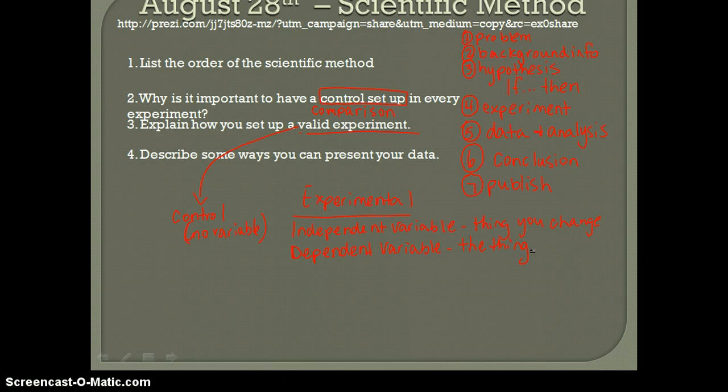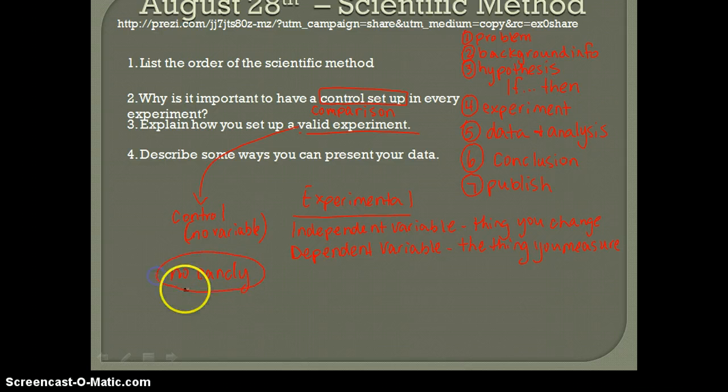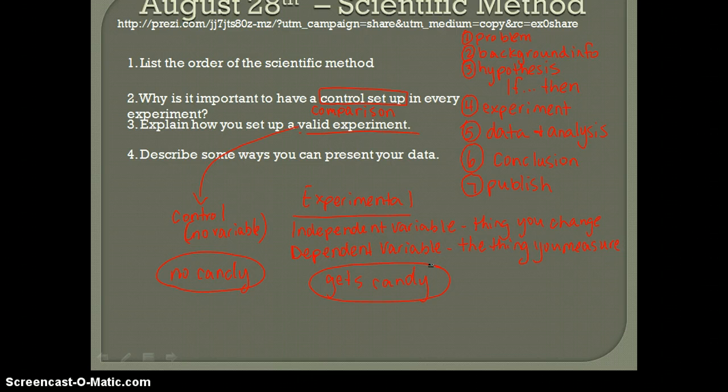Dependent variable is what you measure. So if I'm doing performance on a test, I would look at test scores. So again, independent variable, maybe I'm giving a piece of candy before the test. And dependent variable, I'm seeing if students perform better because they got the piece of candy. So in order to do that experiment, I would need a group that is not getting any candy at all. And that would be my control. So the group without candy is the control. As an example, this gets candy as my experimental. And then my dependent is going to be the test scores.